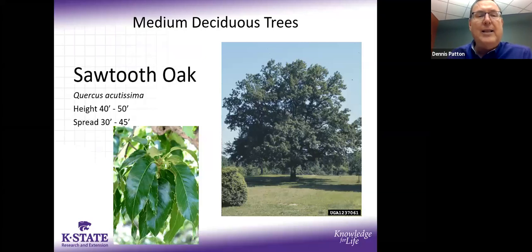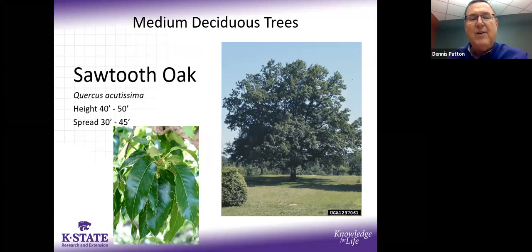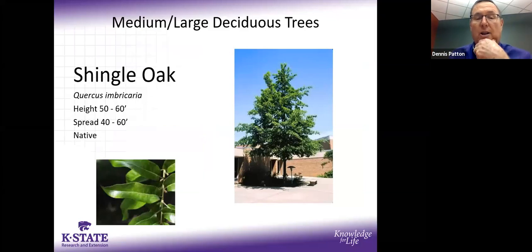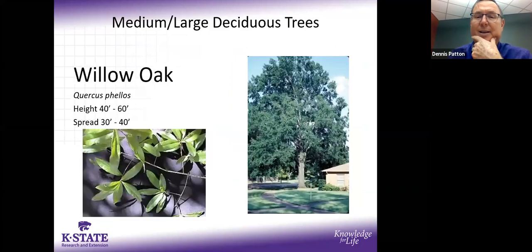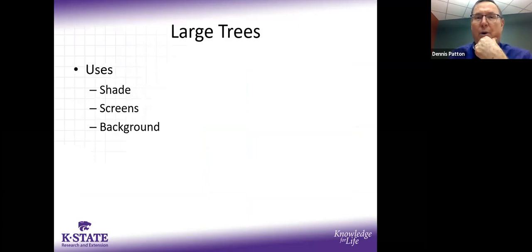A number of oaks are available. Some you may not recognize: sawtooth oak, named for the little projections on each leaf; shingle oak, our native tree (they once made shingles from it); and willow oak, which gives something quite different from the average yard. All do produce acorns and tend to hold their leaves, so cleanup can be more work.